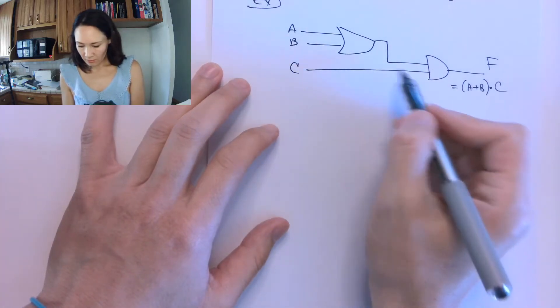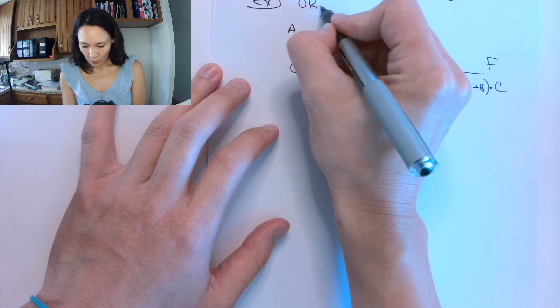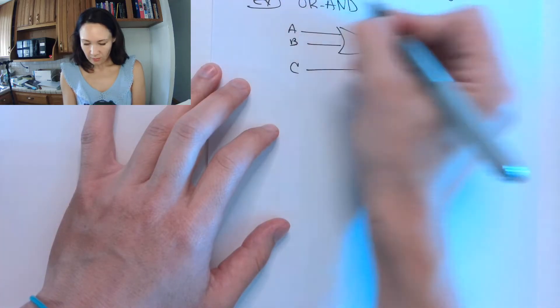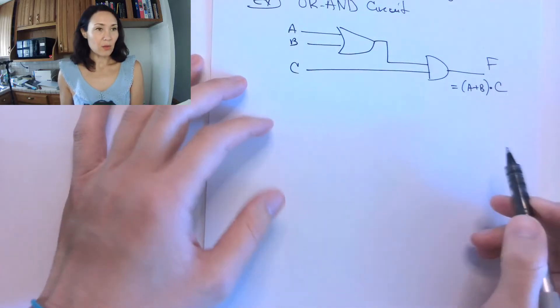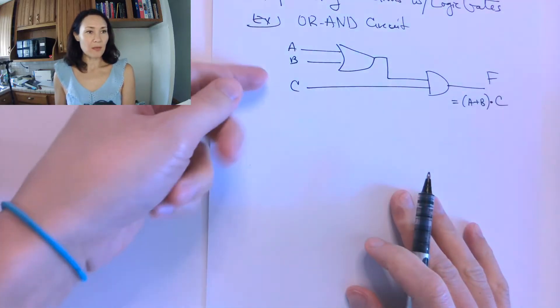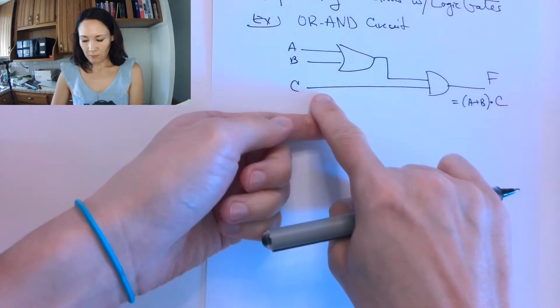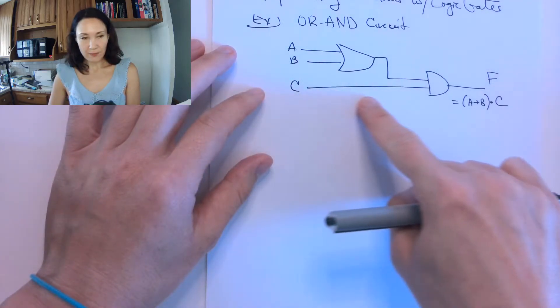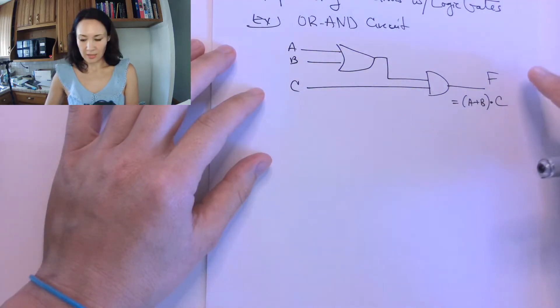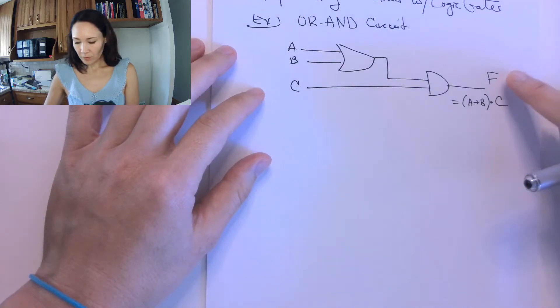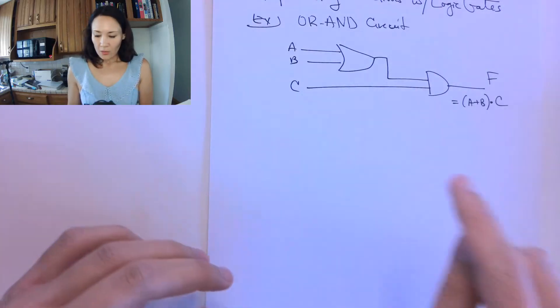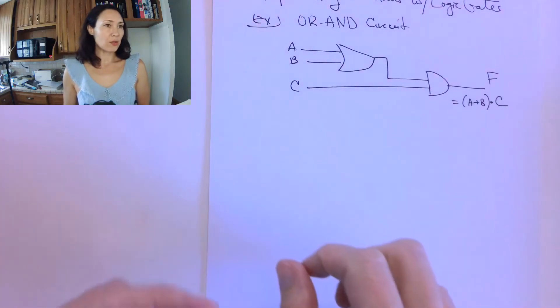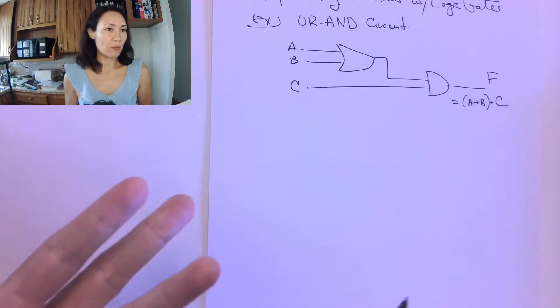This particular example is called an OR-AND circuit. We read this from left to right. The inputs come in from this direction, and they propagate towards the right. At the end is where our final function outputs of the circuit. So this circuit has three inputs. This is the first time we've seen one with three inputs.